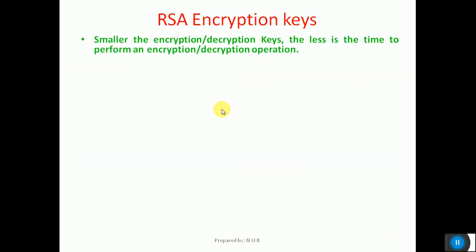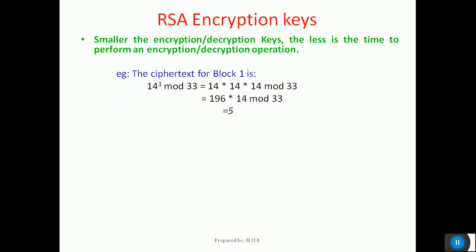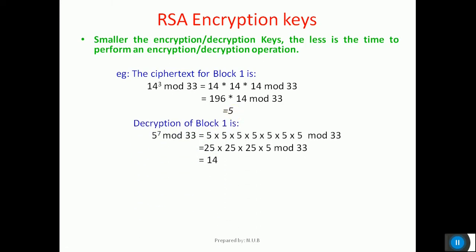As understood in the previous video, the time required for the encryption and decryption process is totally dependent on the size of the keys. As we can understand from this example, for the encryption of block 1, we did 14 to the power 3 mod 33, which gives 5. Similarly, the decryption of the same block has 5 raised to the power 7 mod 33, which is a tedious process that consumes more time. As you can see here, the encryption key is 3 and the decryption key is 7, which is quite a small number.